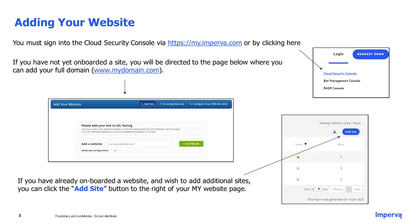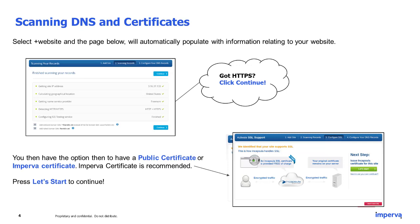Please note that if you have already onboarded a website and wish to add additional sites, you can click the 'Add Site' button on the right side of your 'My Websites' dashboard. Once you've added your first website to Cloud WAF, you will be directed to the next page where Imperva will begin to scan your DNS records.